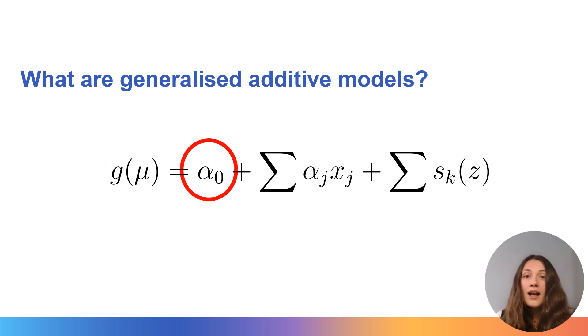On the right hand side the first element is α₀ which is our intercept value or can be thought of as a baseline term. This is the expected outcome where all other values in our model take zero.